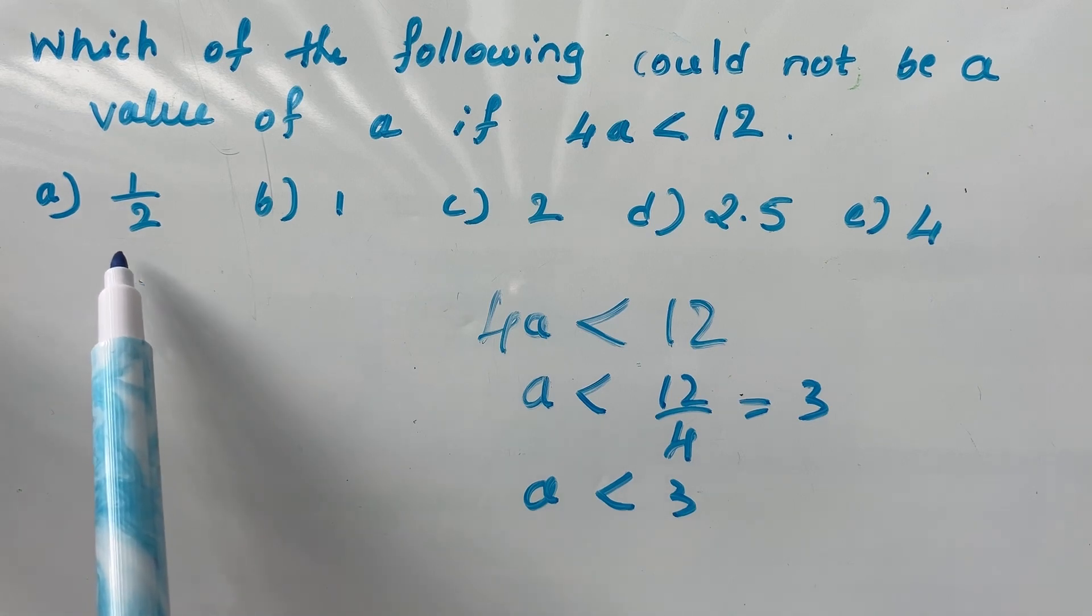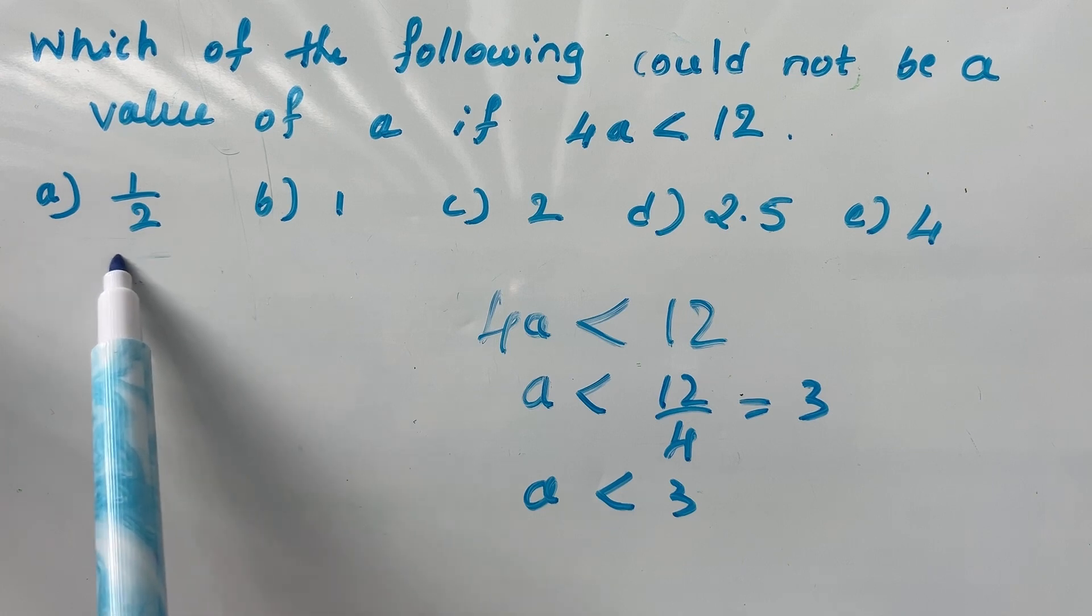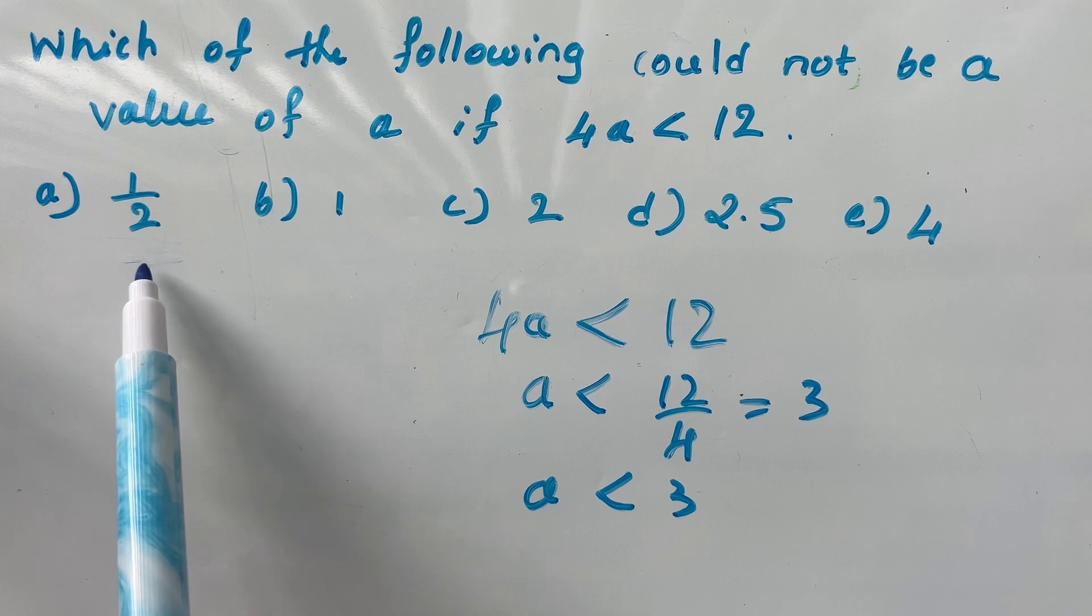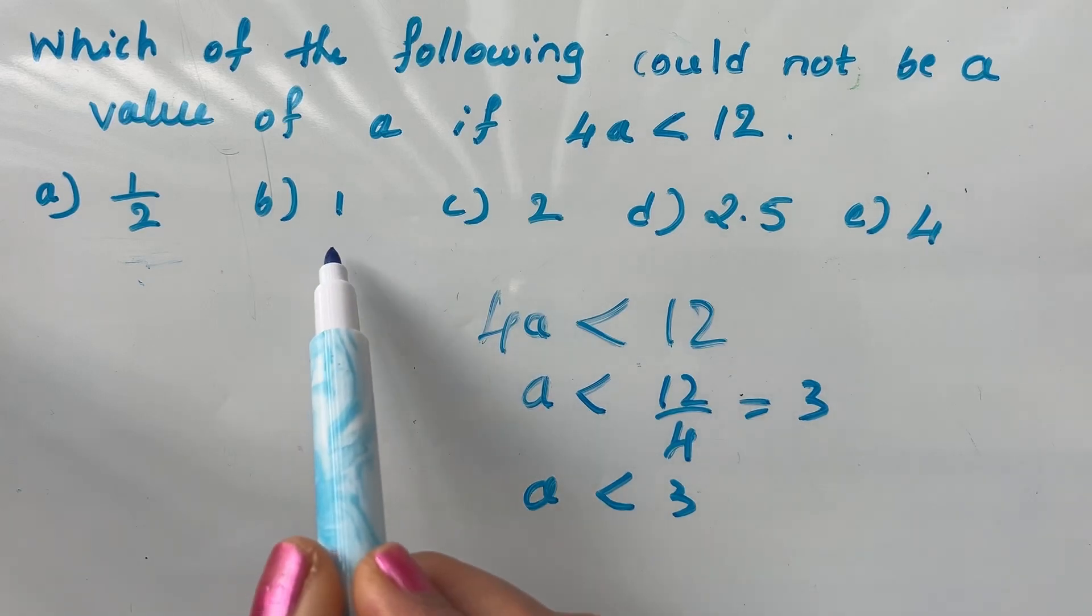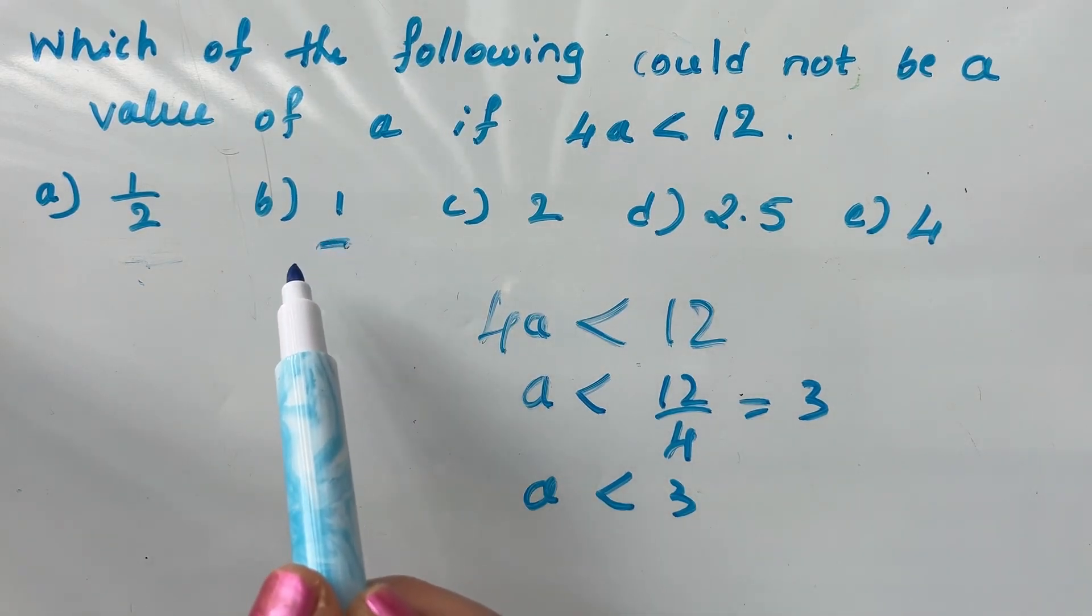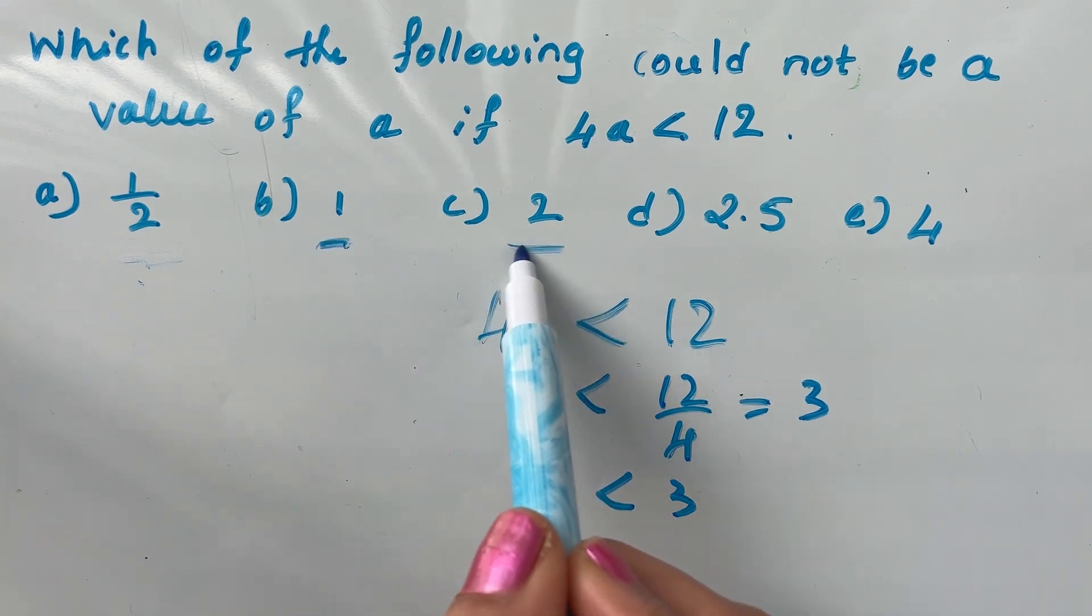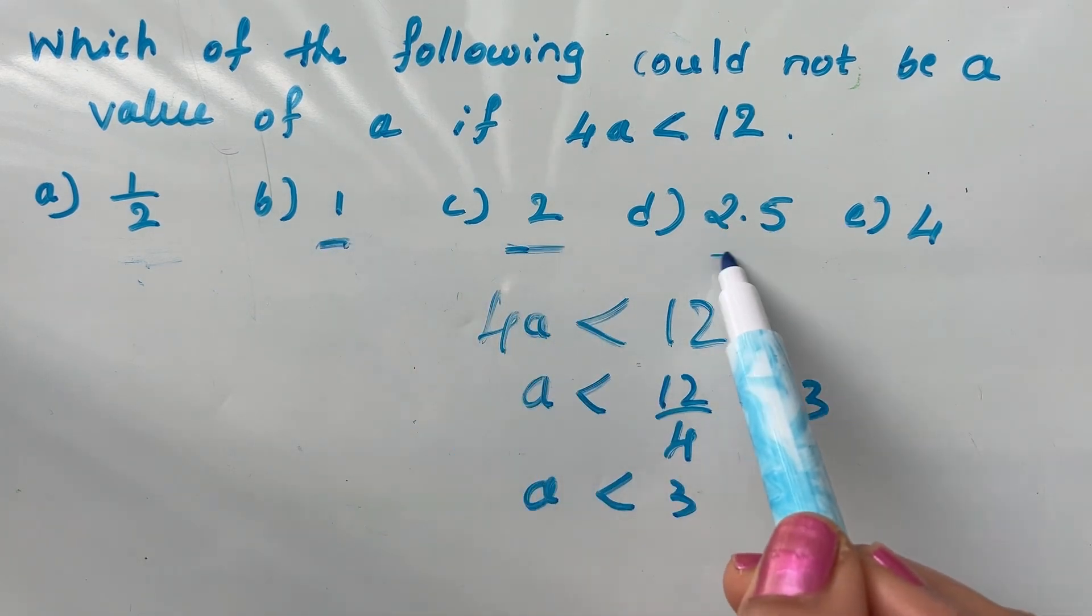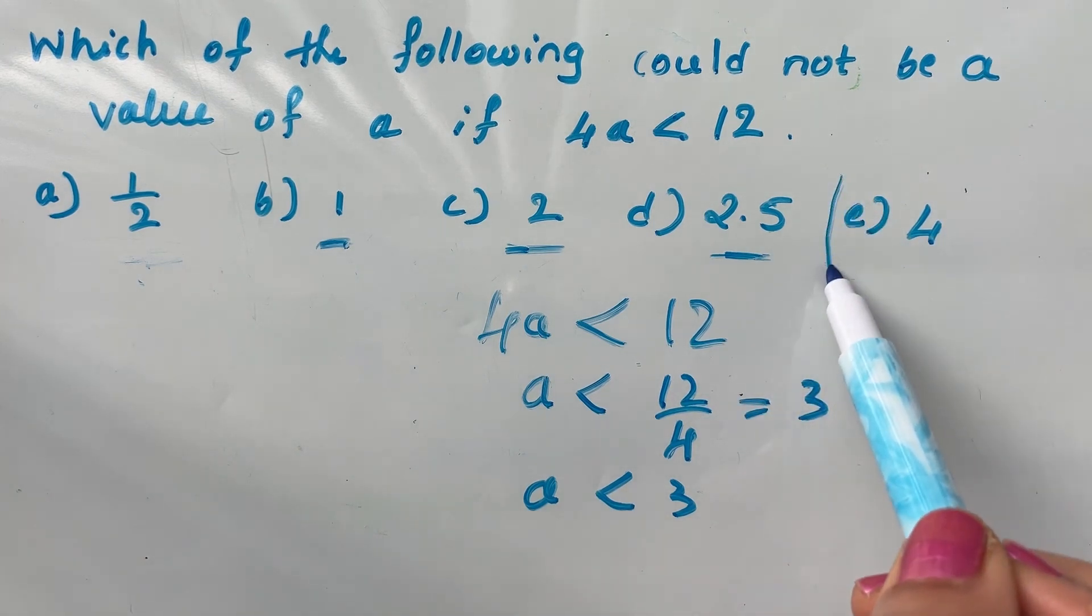Look at the first option. The value is half, so half is less than 3, so a possible value could be half. Next it's given 1, so a is less than 3 means a could be 1, a could be 2, a could be 2.5.